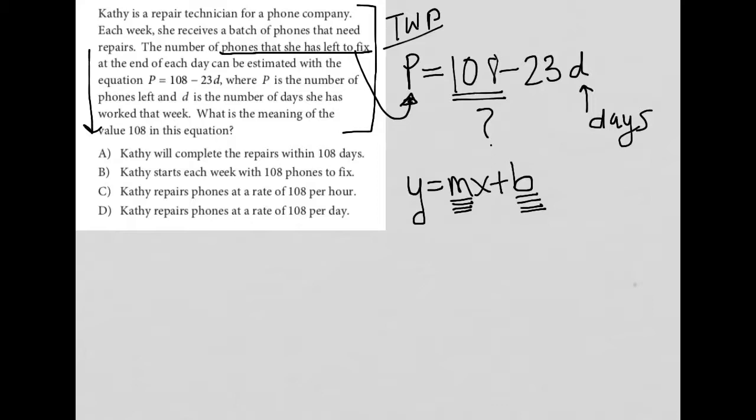So if I were to rewrite the equation given in slope-intercept form, I would have P equals negative 23D plus 108, meaning that when there are no days worked, when D is equal to 0, that there are 108 phones to work on, and that each day she loses or she works on 23 of them.